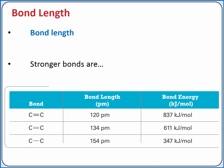Bond length is the distance between the two nuclei in a bond. We can see from comparing carbon-carbon bonds that between two given atoms, stronger bonds are shorter bonds.